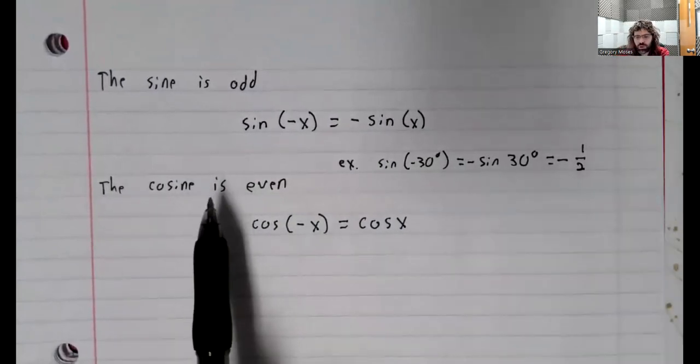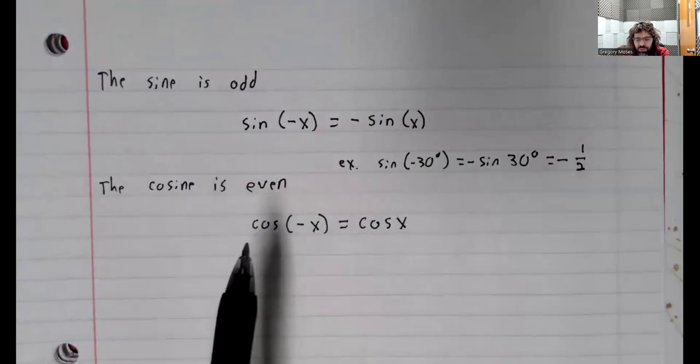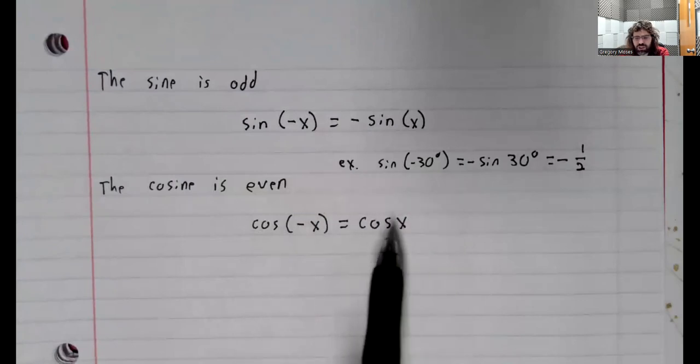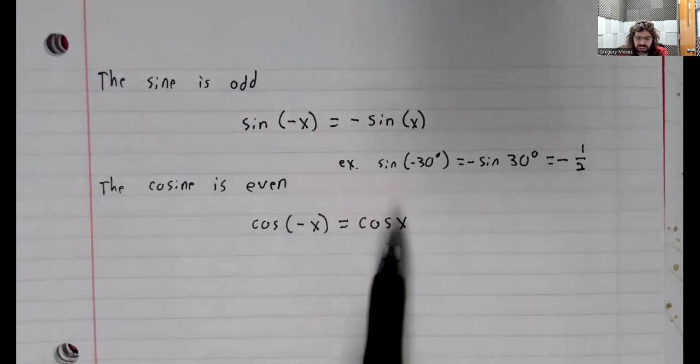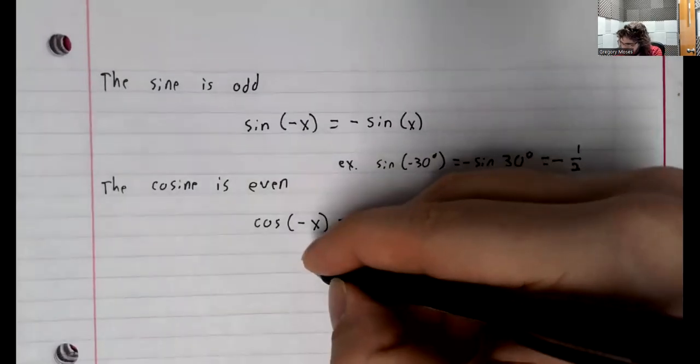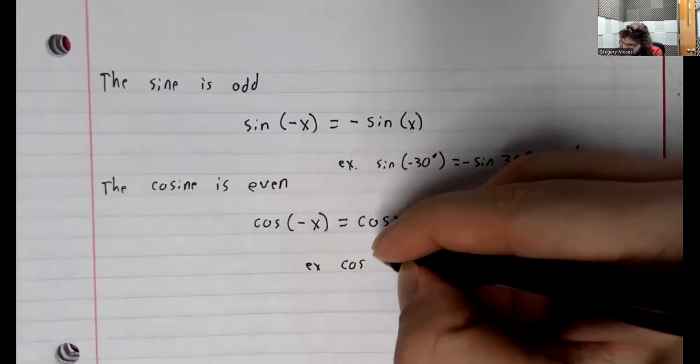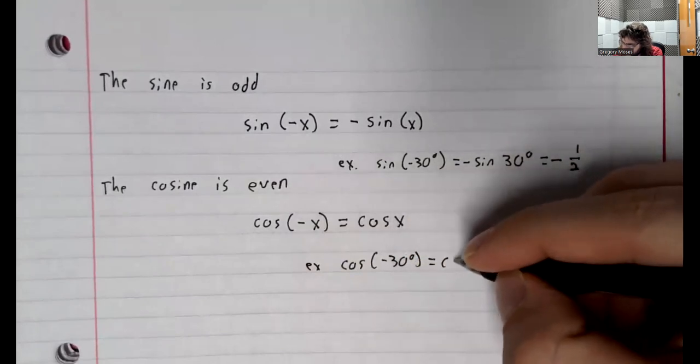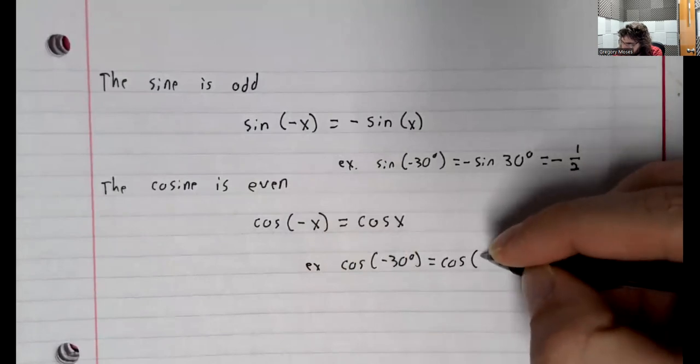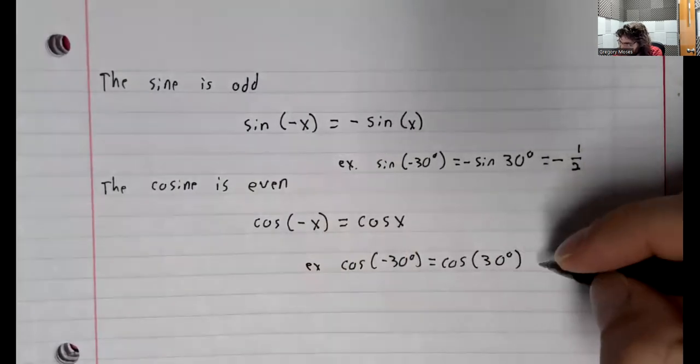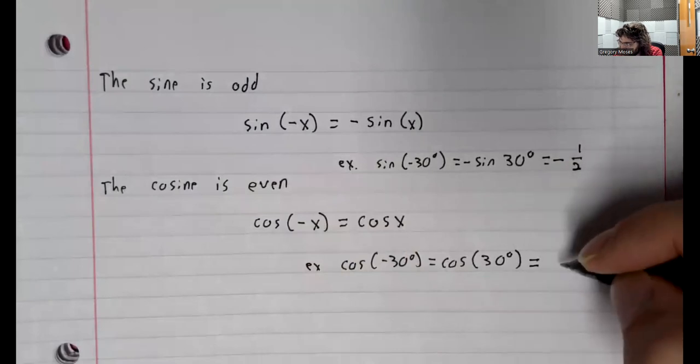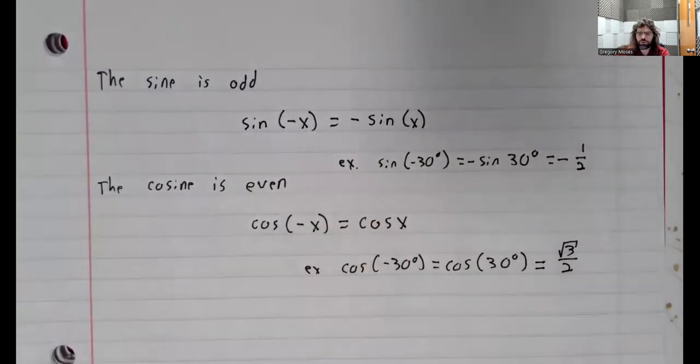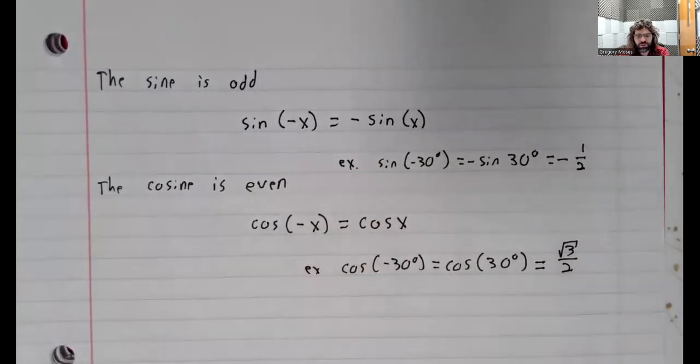The cosine being even means that the cosine of negative x is the same as the cosine of positive x. The cosine of negative 30 degrees is the same as the cosine of positive 30 degrees, which is the square root of 3 over 2.